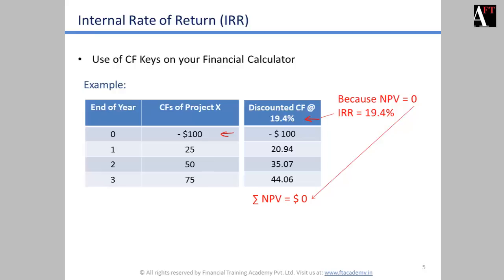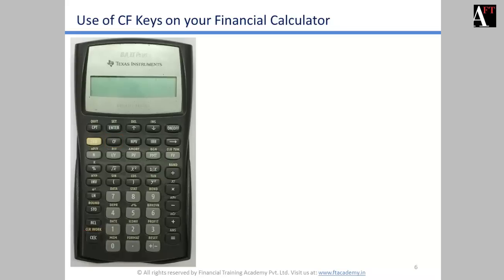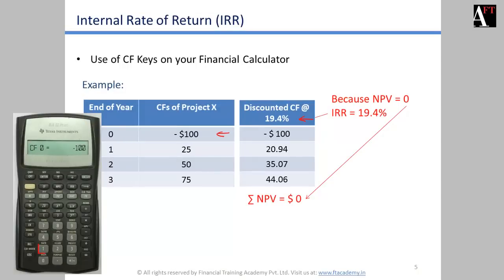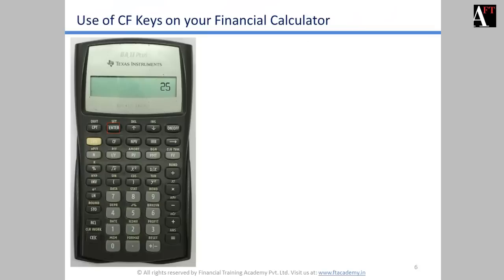To compute IRR on the financial calculator: press Cash Flow, Clear Work. Enter CF0 as minus 100, press Enter, down arrow key to C01 which is 25, press Enter, down arrow key — F01 frequency is one — down arrow key, C02 is 50, press Enter, down arrow key, F02 down arrow key, C03 is 75, press Enter. Now directly press IRR and press Compute. It will give you an IRR of 19.4%.